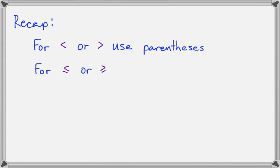So one more time, here it all is again. For less than or greater than, we use parentheses. And for less than or equal to, or greater than or equal to, we use square brackets. Of course, we shade the same direction that the symbol points as long as the variable is on the left like it usually is.